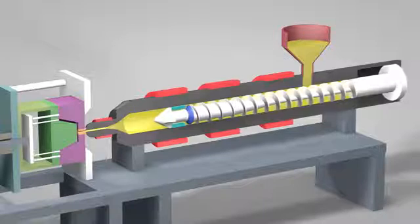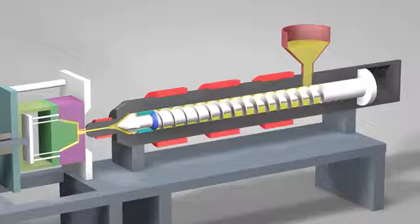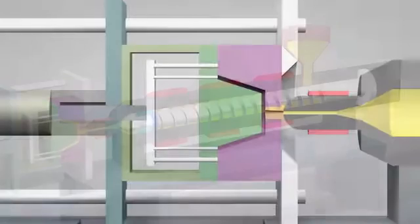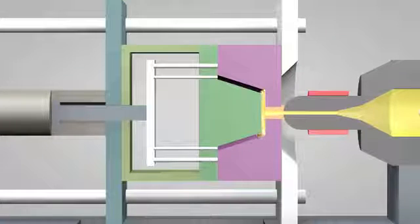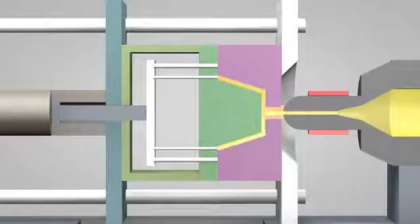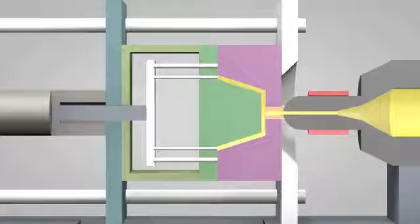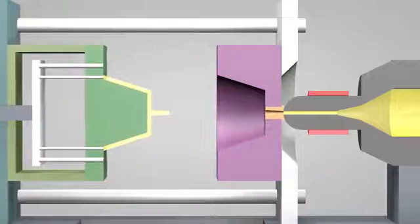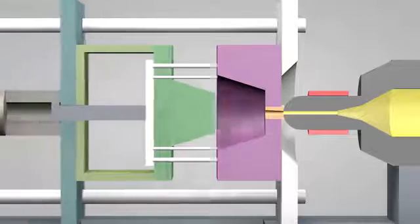Once enough molten plastic is in front of the screw, it ramps forward like the plunger of a syringe. In a matter of seconds, the screw injects the molten plastic into the empty part of the mold called the cavity image. The plastic solidifies in under a minute. The mold opens and the part is ejected. The mold then closes and the process repeats.